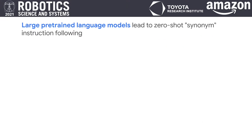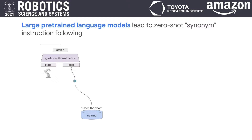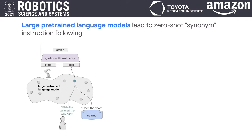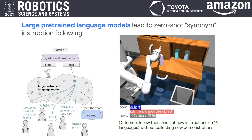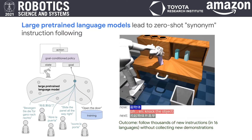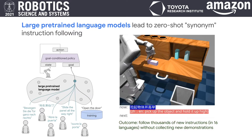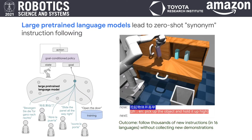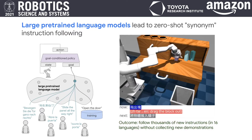Finally, we find that simply by combining our method with large pre-trained language models, our agent is able to follow thousands of new synonym instructions at test time in zero-shot, without requiring any new demonstrations. Here are some examples of our agent following zero-shot instructions in 16 different languages.